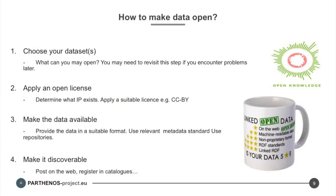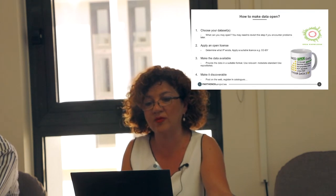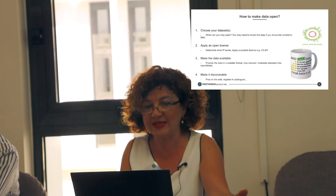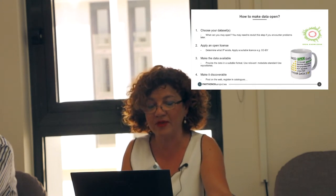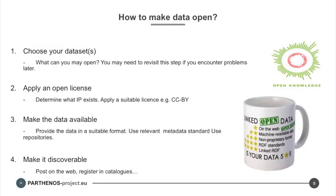So how to make open data? You can follow the guidelines of the Open Knowledge Foundation. The first step is to choose your dataset. They recommend that you ask the community first — the people who will be accessing and using the data — as they are likely to have a good understanding of which data could be valuable. Then you apply a suitable license, like CC BY. Even in places where the existence of rights is uncertain, it is important to apply a license simply for the sake of clarity. Then you make data available in a suitable format, using relevant metadata standards and repositories.